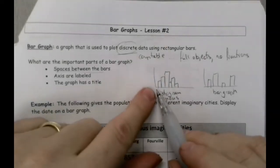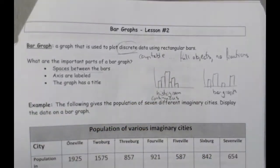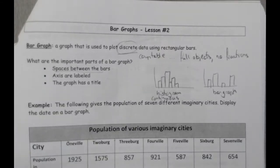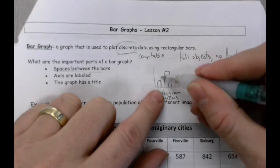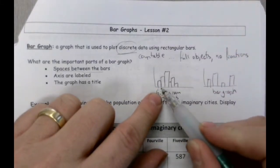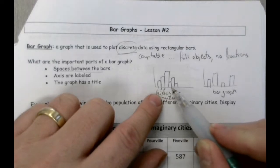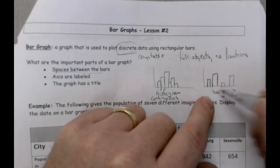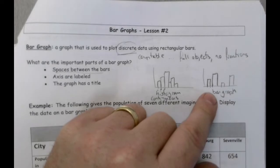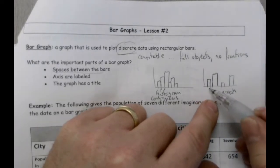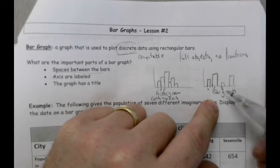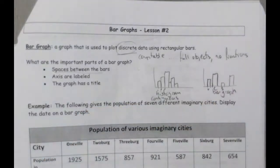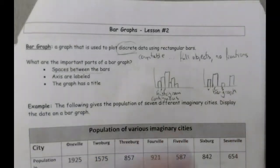With continuous data, maybe you're talking about the heights of people. Height is a continuous thing — you can be any particular height between, say, a meter and two meters. Every single value in between, people can be that. So we tend to break it up into groups. With bar graphs, we're talking about data that doesn't necessarily run into each other. Maybe we're talking about the number of people that like a certain type of ice cream — vanilla, chocolate, strawberry, and so on.